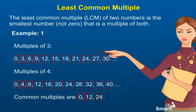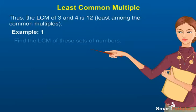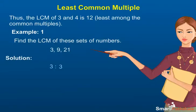Multiples of 4: 0, 4, 8, 12, 16, 20, 24, 28, 32, 36, 40 and so on. Common multiples are 0, 12, 24. Thus, the LCM of 3 and 4 is 12, least among the common multiples.